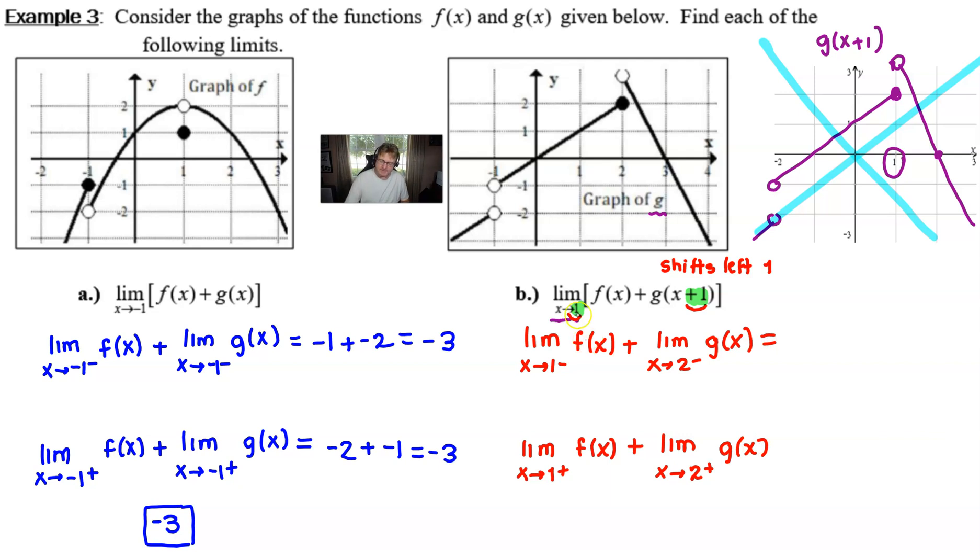For the function f(x), as x approaches 1 from the left, I'm going to get a y value of 2. For g(x), as x approaches 2 from the left, I'm going to get a y value of 2. And therefore, the result is 4.